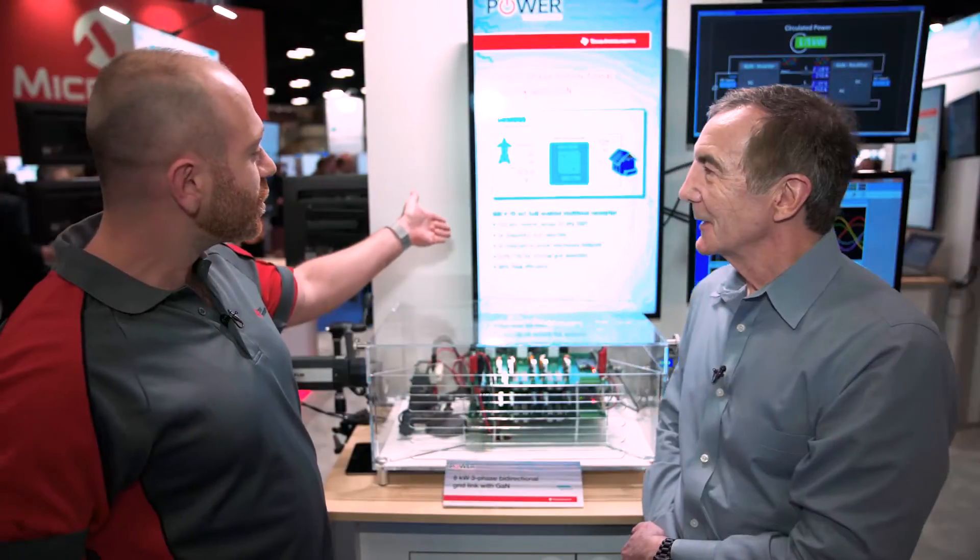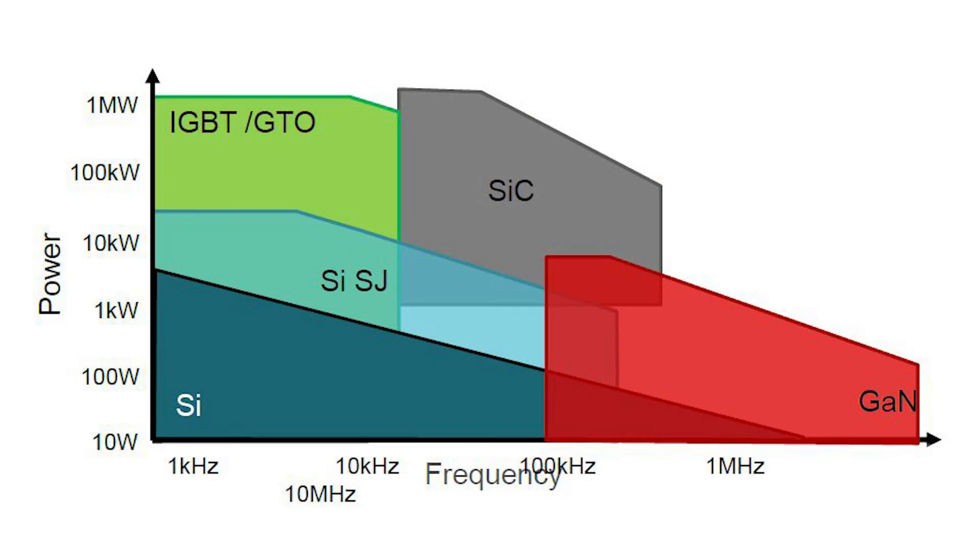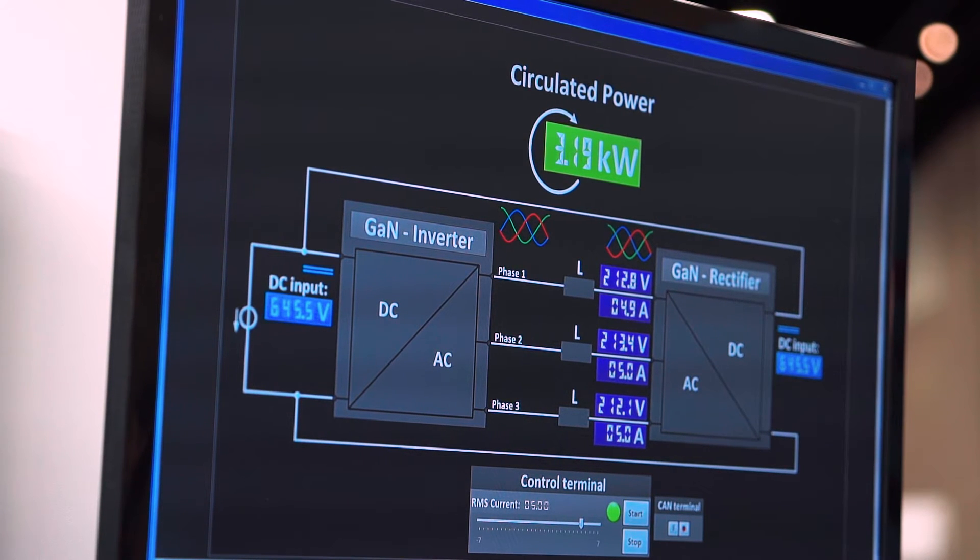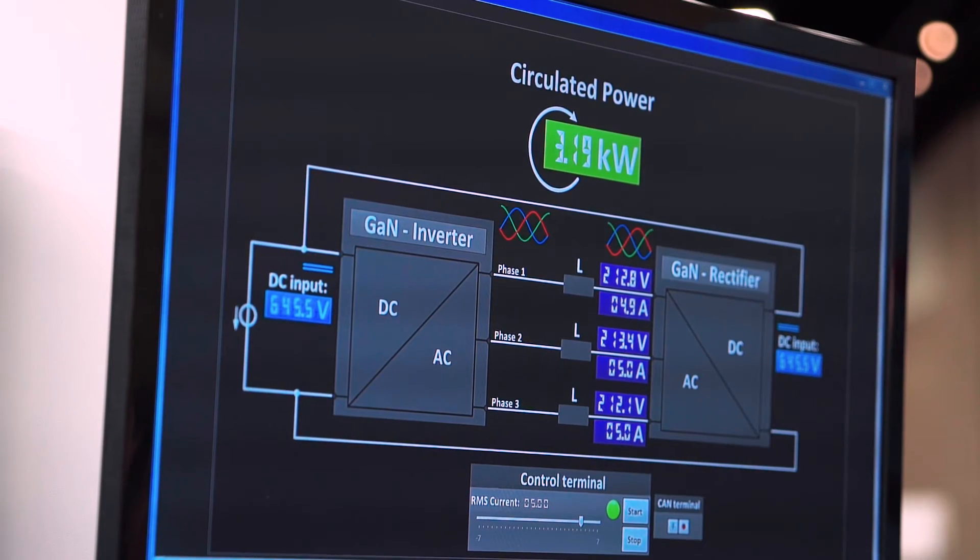So here you are actually increasing the switching frequency from 20 kHz to 150 kHz, and that helps shrink the size of the passives in the system. So we shrink the inductor size by 80% and the power semiconductor footprint area by 80%.